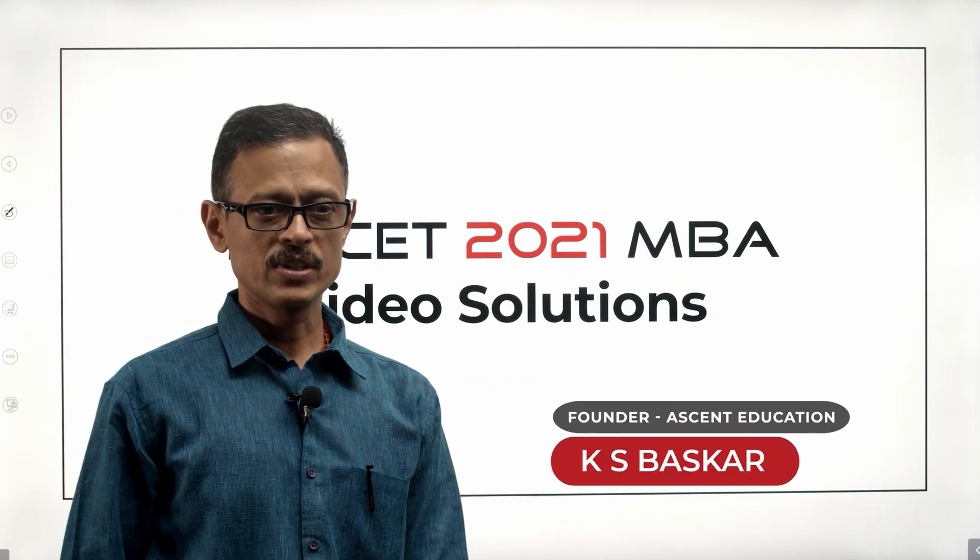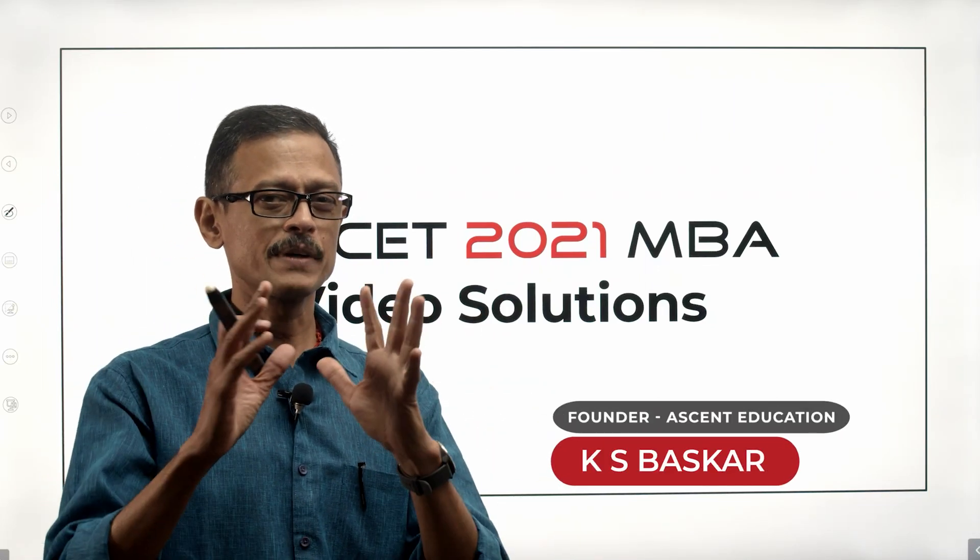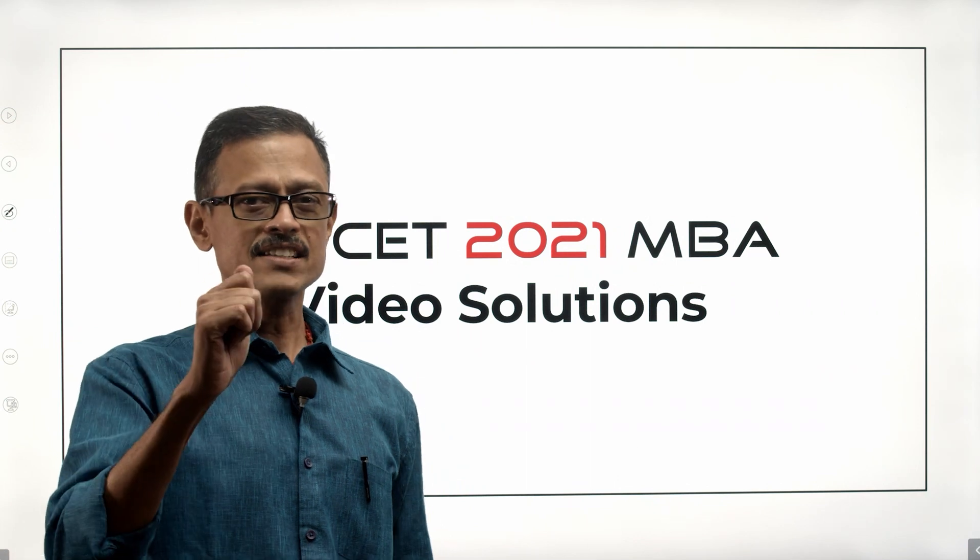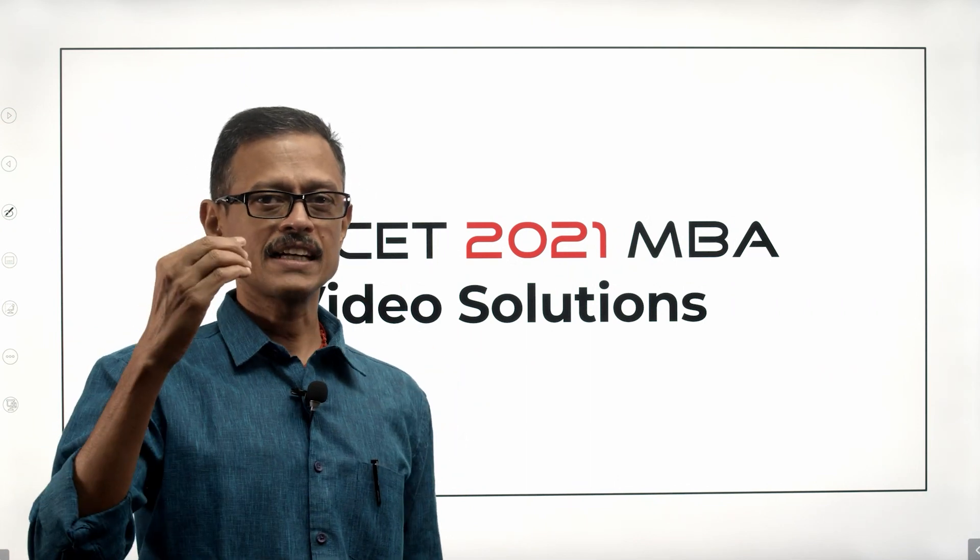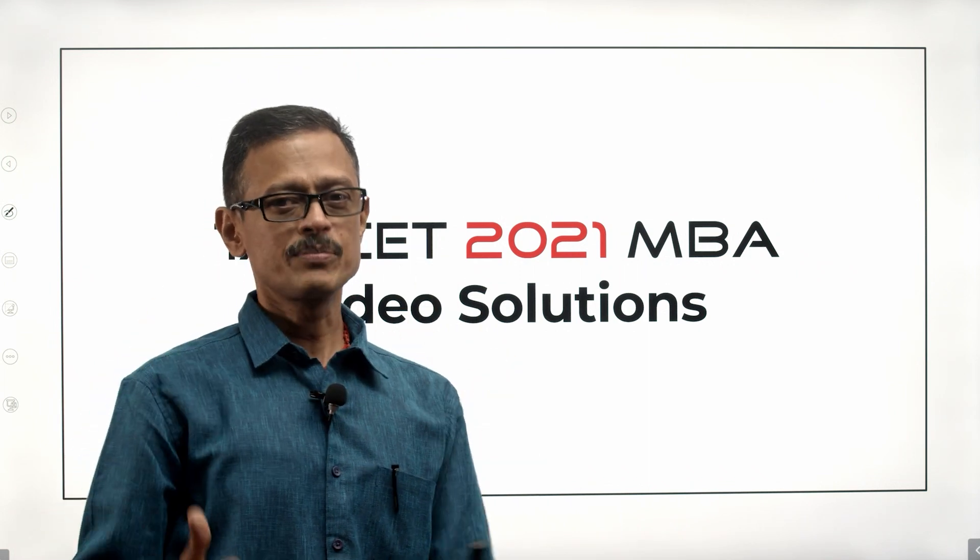It is a data sufficiency question - number properties, number systems. Interesting question. There is a lot of little things that you need to watch out for, especially when it comes to the definition of types of numbers.